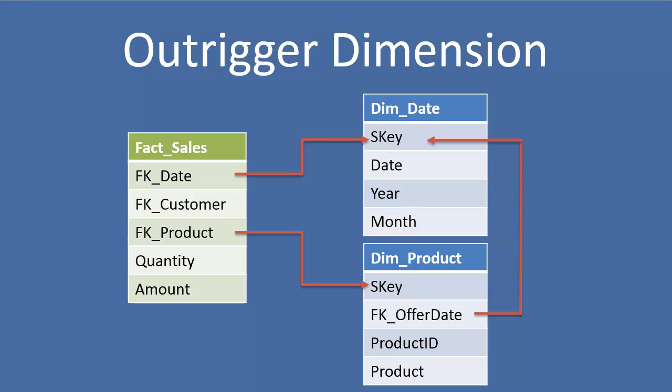By adding this foreign key in our product dimension, we're able to query our product dimension without going through the fact table, for example. We could filter out all products that have an offer date within a certain year. That could be resolved without ever going through our fact table.